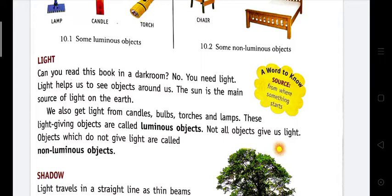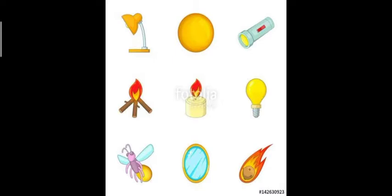In the daytime we get light from the Sun, and in the night we get light from various things like bulbs, candles, tube lights, torches, and lamps. Here are some objects shown in the picture — they all emit light, and by that light we can work or read books.